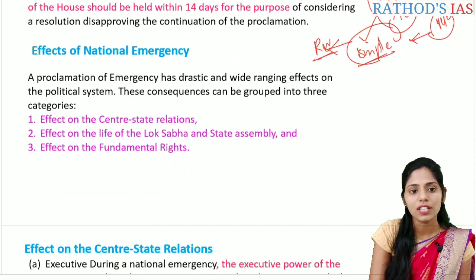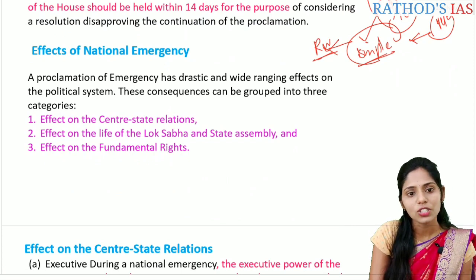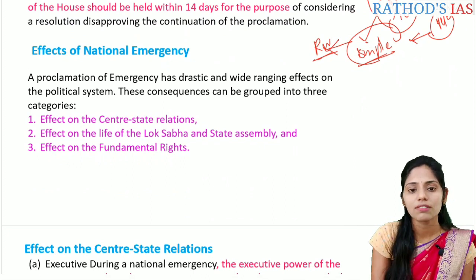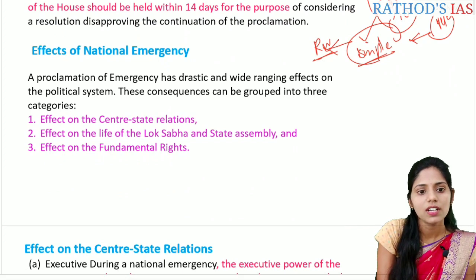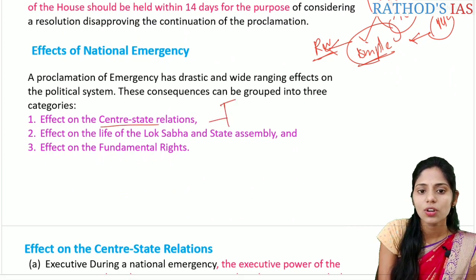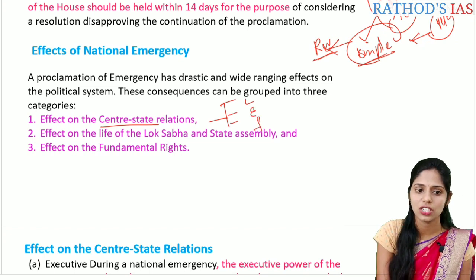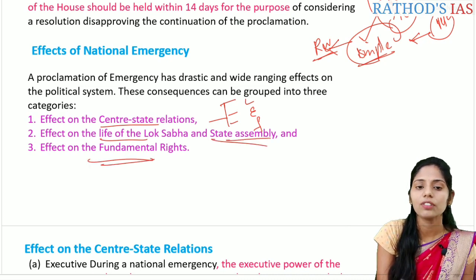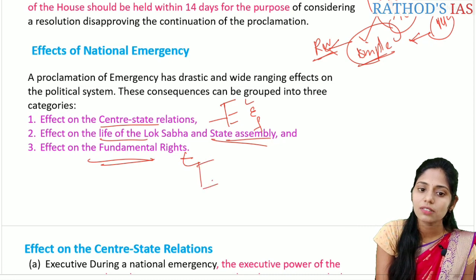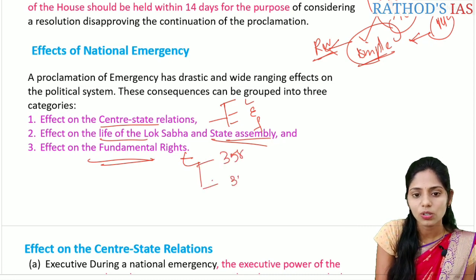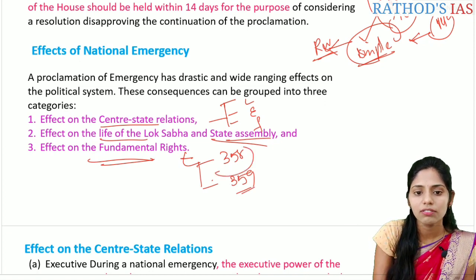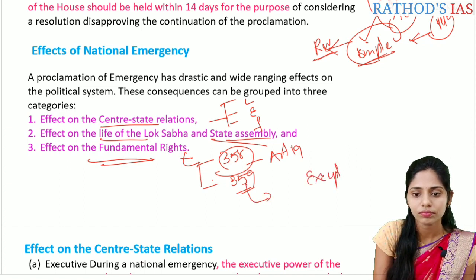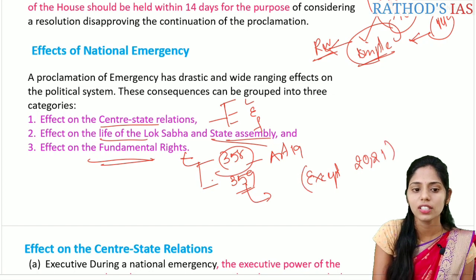Let us see the effects of national emergency. The proclamation of emergency has drastic and wide-ranging effects on the political system. These consequences can be grouped into three categories: first, effect on central-state relations (covering legislative, executive, and financial relations); second, effect on the life of Lok Sabha and state assembly; and third, effect on fundamental rights — specifically under articles 358 and 359, where article 358 talks about article 19 and article 359 talks about suspension except articles 20 and 21.